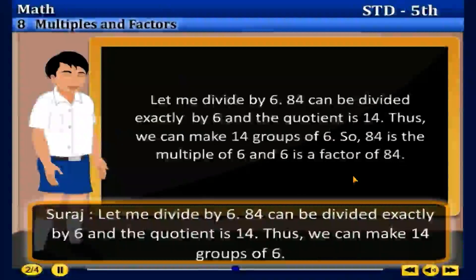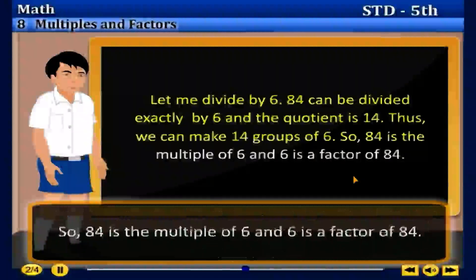Suraj: Let me divide by 6. 84 can be divided exactly by 6, and the quotient is 14. Thus, we can make 14 groups of 6. So, 84 is a multiple of 6, and 6 is a factor of 84.